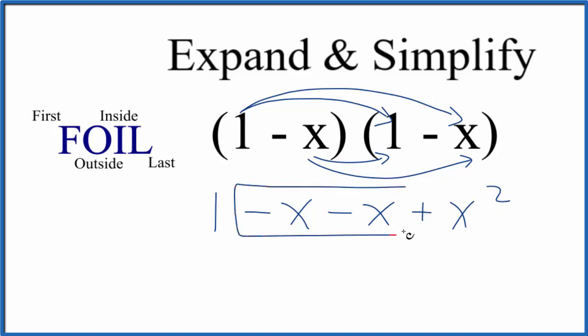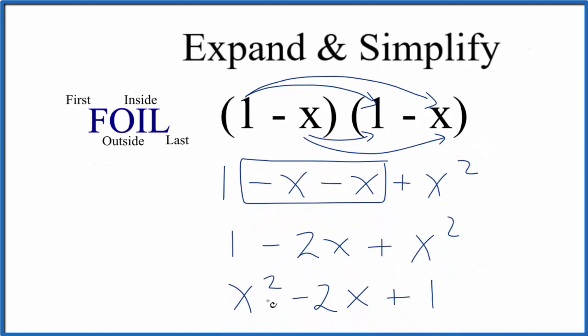These two terms are similar. Let's just combine those and we have 1 minus 2x plus x squared. Often you'll see this written like this here, just kind of the reverse: x squared minus 2x plus 1. It's the same thing, just written with the x squared term first.